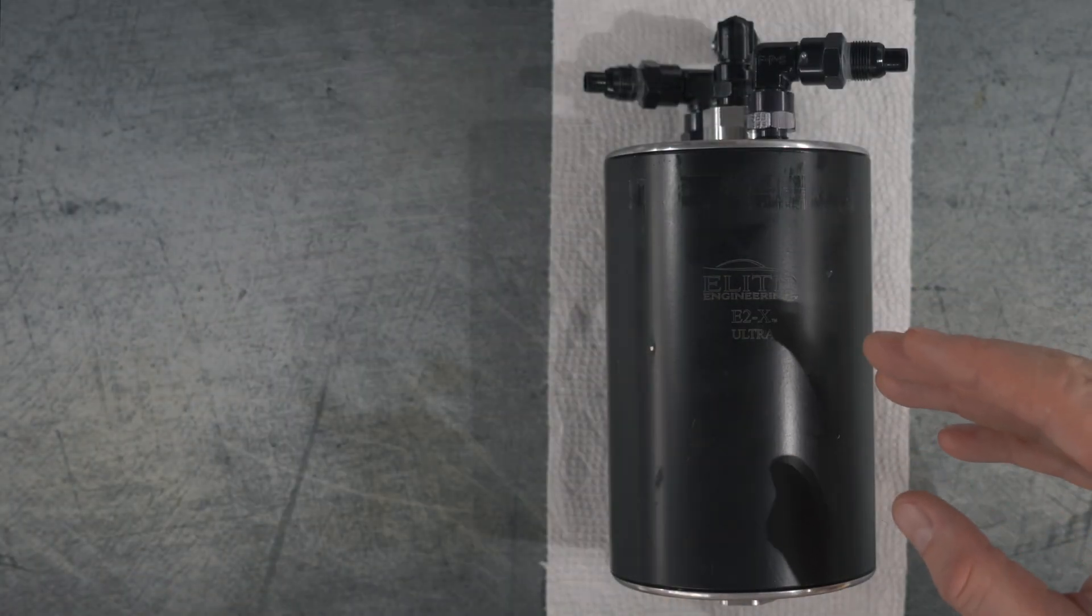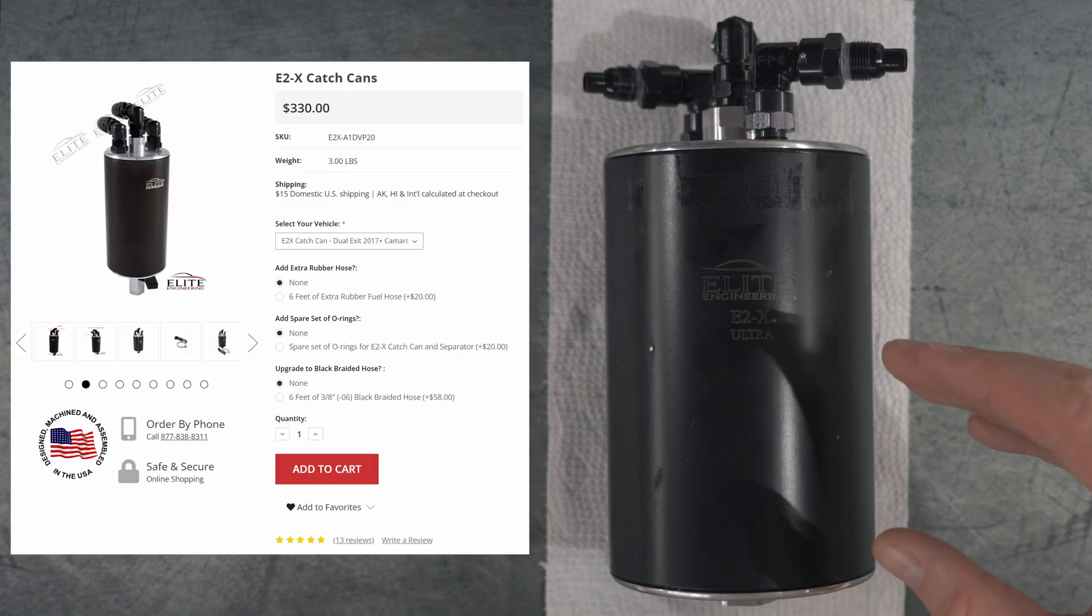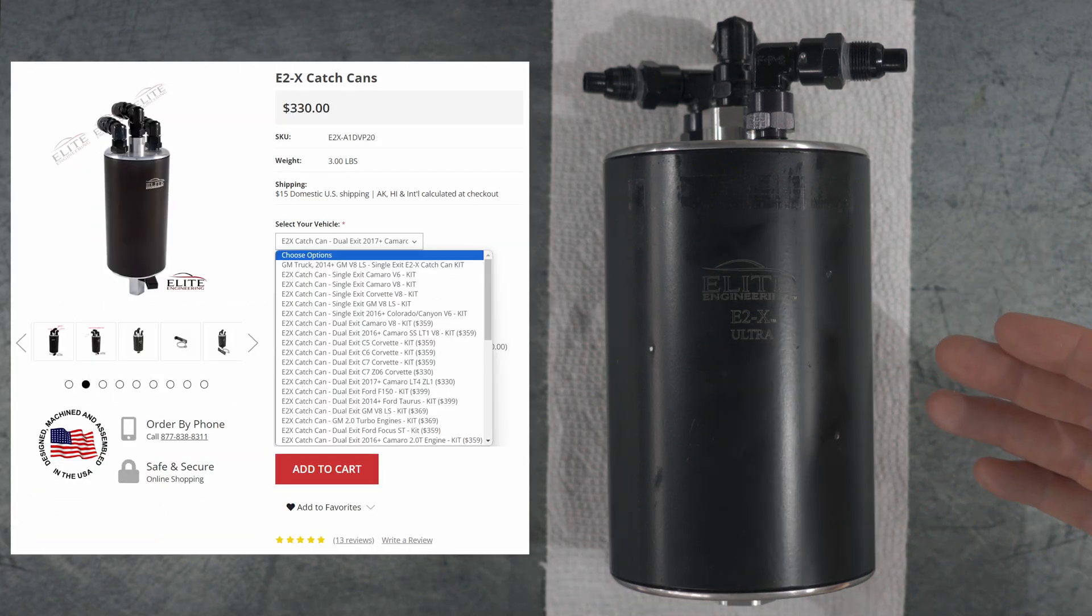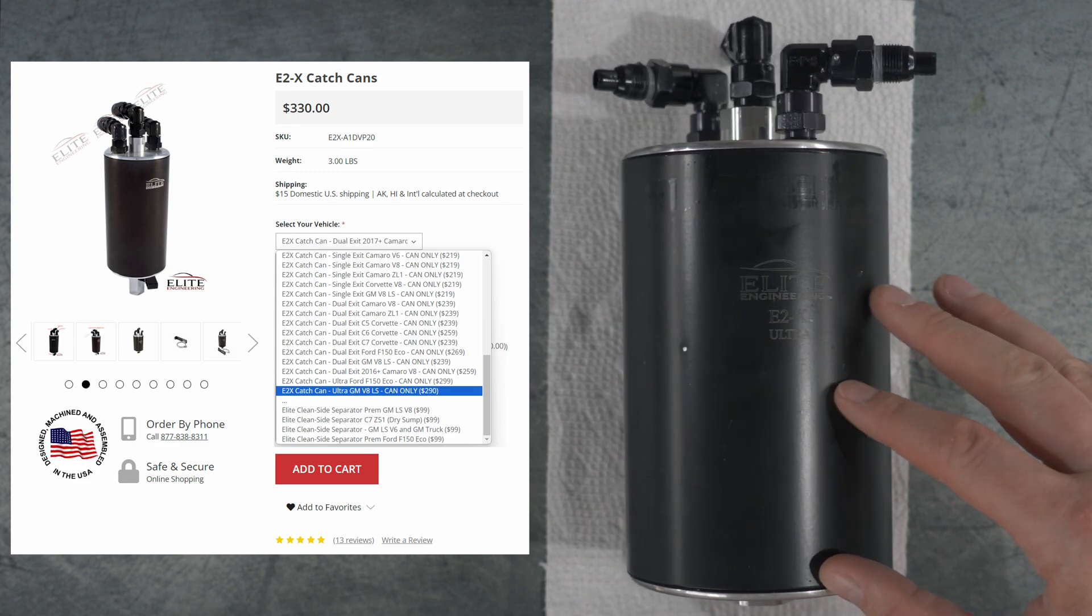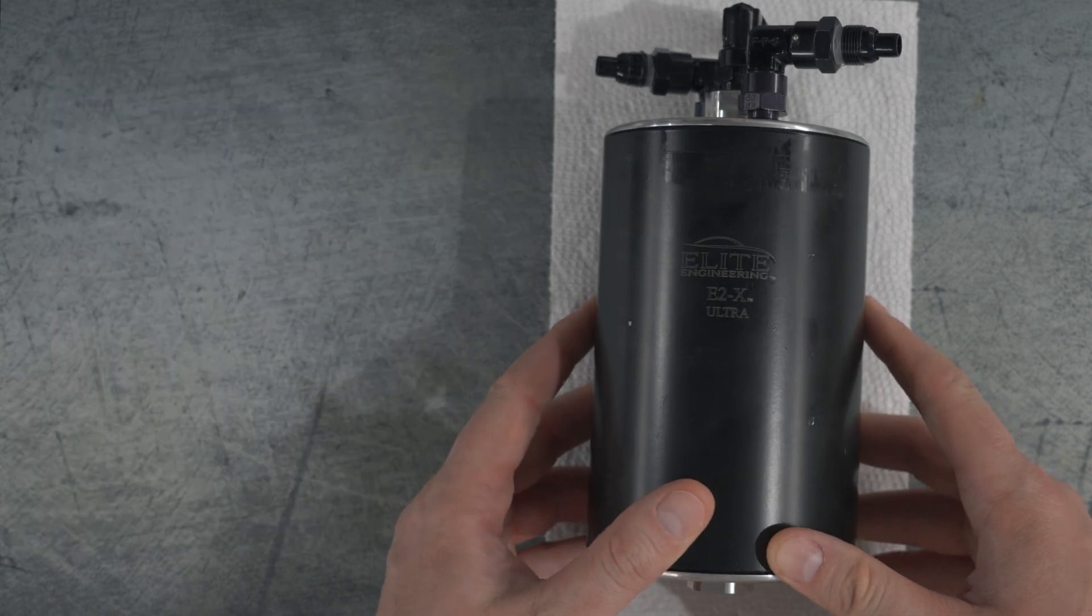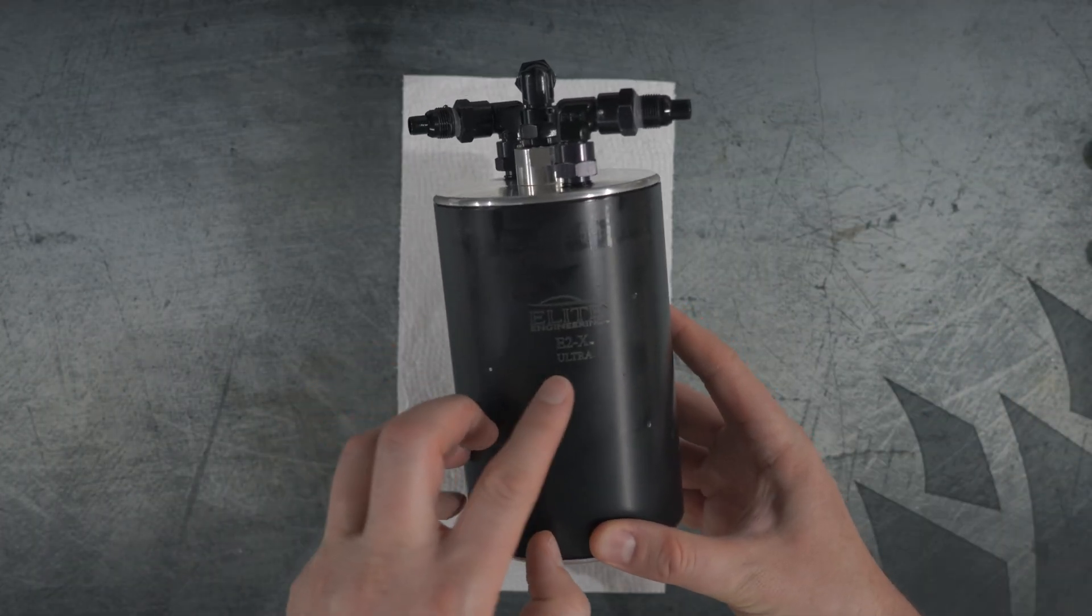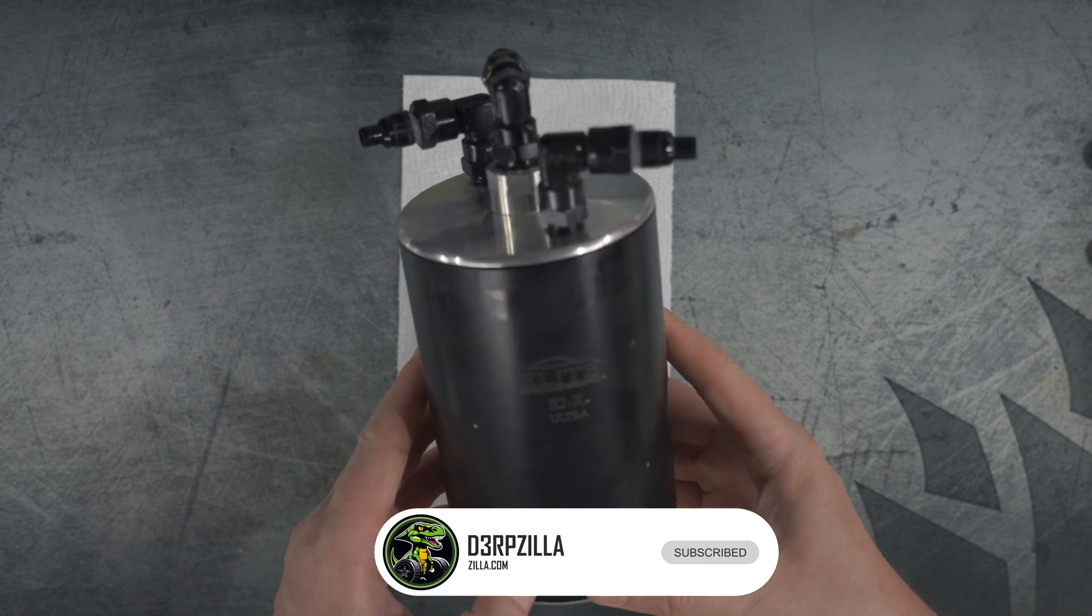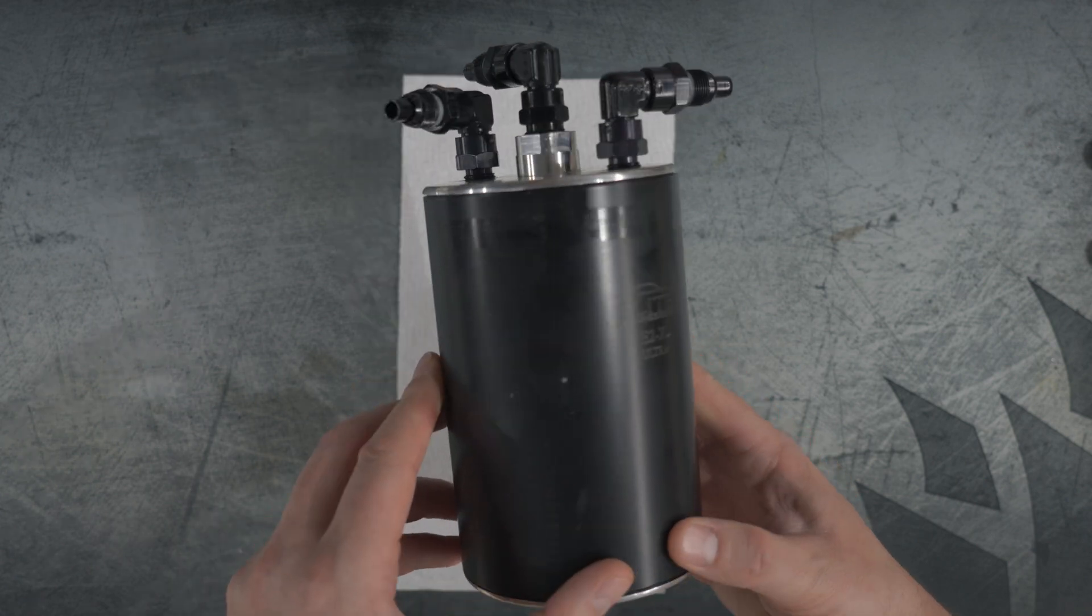Elite Engineering offers their E2X series of catch cans with a few different variations and options. The version I have here on my workbench is the larger Ultra version with a capacity of 20 ounces, and also for cars capable of 1,000 horsepower or more. They offer their smaller regular version, which is this E2X, which I believe has a capacity of about 12 ounces, and for cars technically below 1,000 horsepower.